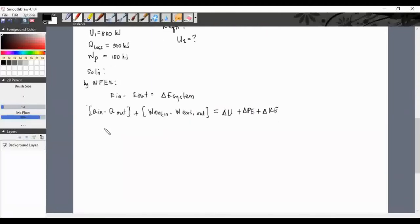We have Q_in = 0, there's no heat entering. But for Q_out, there is heat leaving. For work external in, is there work entering? Yes, this is what we call paddle work. Next, is there work leaving? No, so that's zero.